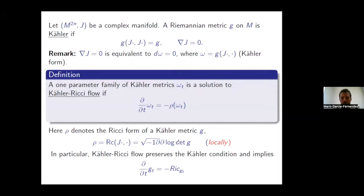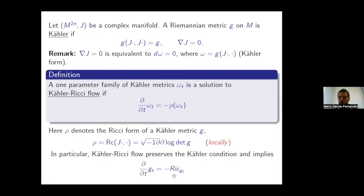In particular, the Hermitian form ω_t is evolving locally by something which is d̄-closed, hence d-closed, and therefore the Kähler-Ricci flow preserves the Kähler condition. Taking this equation and rotating by J gives a solution of Ricci flow. There is a factor of two when you consider this from complex geometry, but it just amounts to rescaling time.